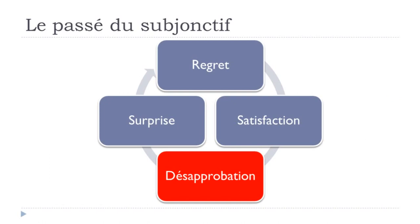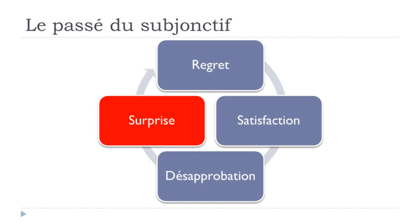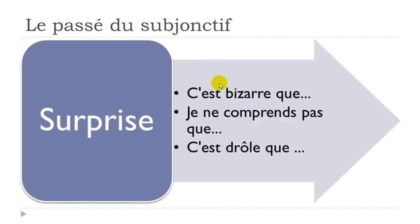La désapprobation. Structures include: ça m'ennuie que (it annoys me that), ça m'agace que (it bothers me that), je ne comprends pas que (I don't understand that). If you want to express something in the past, what comes after should be le passé du subjonctif. And last but not least, la surprise: c'est bizarre que (it's strange that), je ne comprends pas que, c'est drôle que (it's funny that). Again, if you want to express something at the past, it should be le passé du subjonctif.